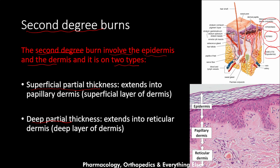A superficial partial thickness burn extends into the papillary dermis, which is the superficial layer of the dermis. The dermis has two layers: the papillary layer and the reticular layer. In the superficial partial thickness burn, the papillary dermis is burned while the reticular dermis is spared. In the deep partial thickness burn, the burn extends into the reticular dermis, so both layers would be burned.